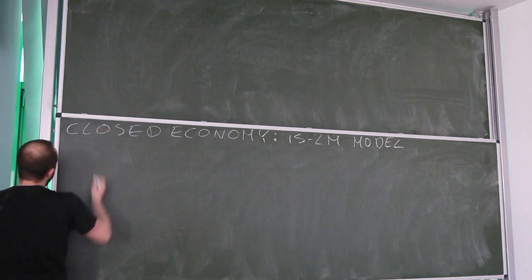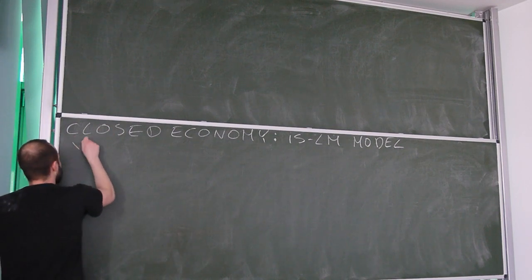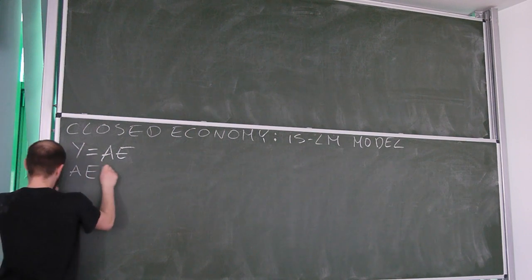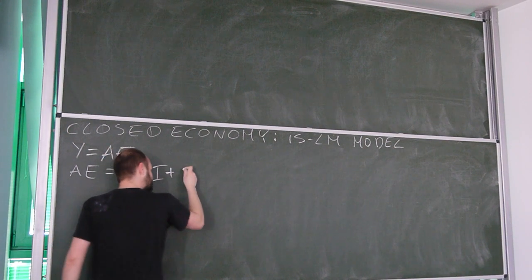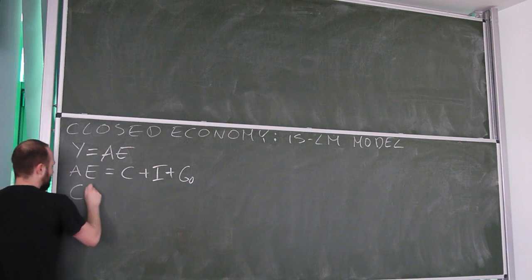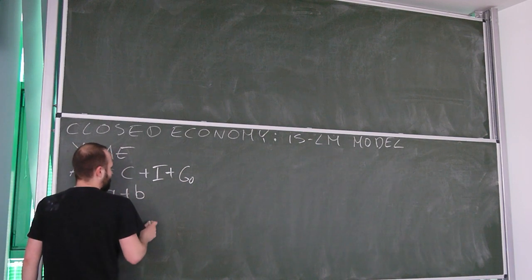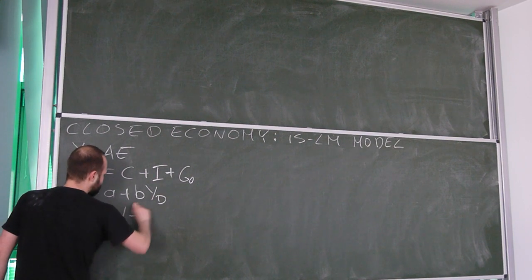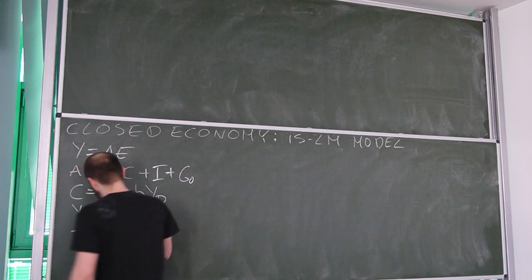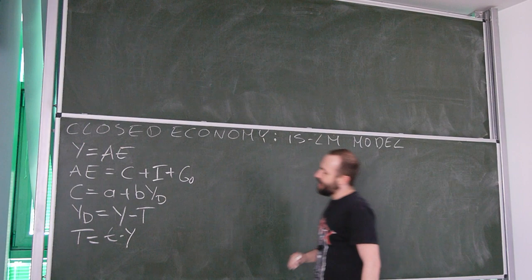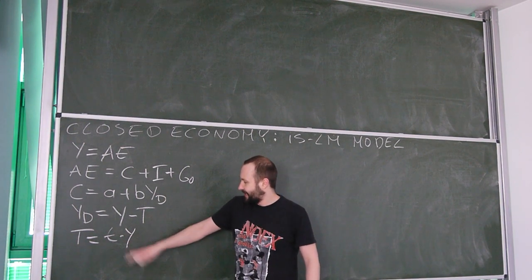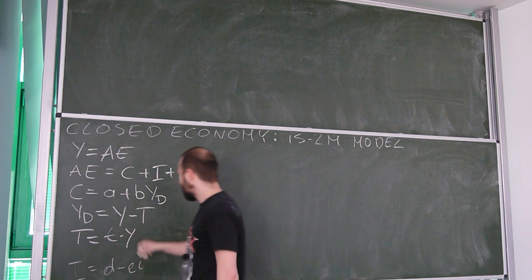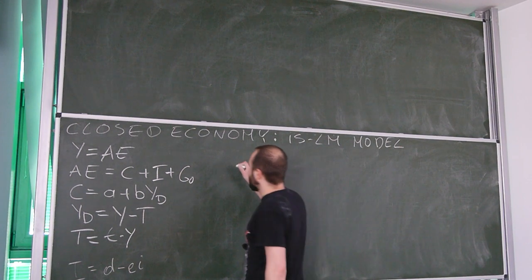First let's set up the model. For the market for goods and services, the equilibrium condition is income equals aggregate expenditures. Aggregate expenditures equal consumption plus investment plus government spending, given exogenously. Consumption is autonomous consumption plus marginal propensity to consume times disposable income, which is income minus taxation. We assume a flat tax, so tax revenues are given by a flat tax on income. Investment is given by autonomous investment minus e times the interest rate.